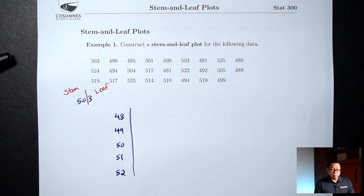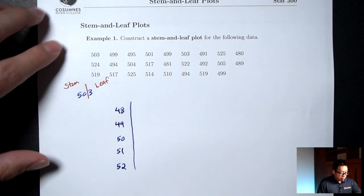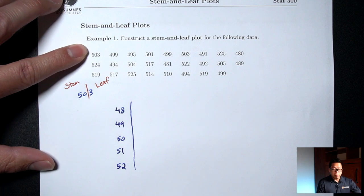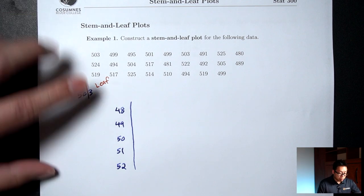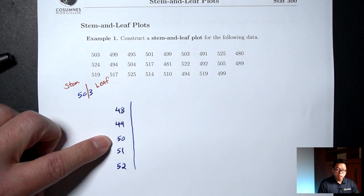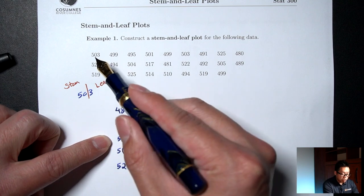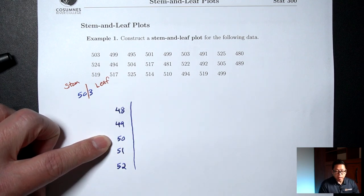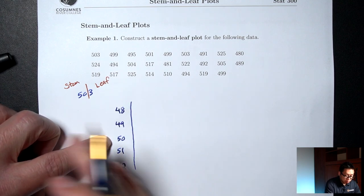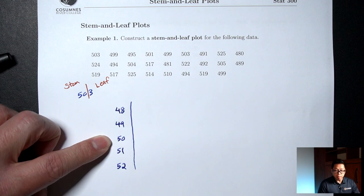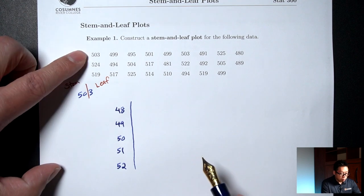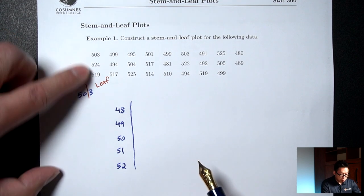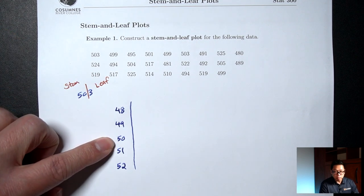Then we're just going to go through our data. 503 is going to go with the 50 stem, and we're just going to write the very last digit as a leaf. So the right side is going to be my leaves. 503 goes with 50, and we write the very last digit, which is 3.